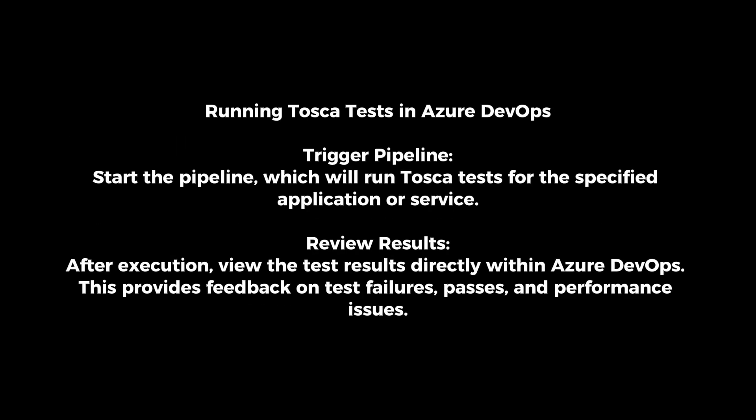Running Tosca tests in Azure DevOps. Trigger the pipeline to start running Tosca tests for the specified application or service. After execution, review results directly within Azure DevOps. This provides feedback on test failures, passes, and performance issues.